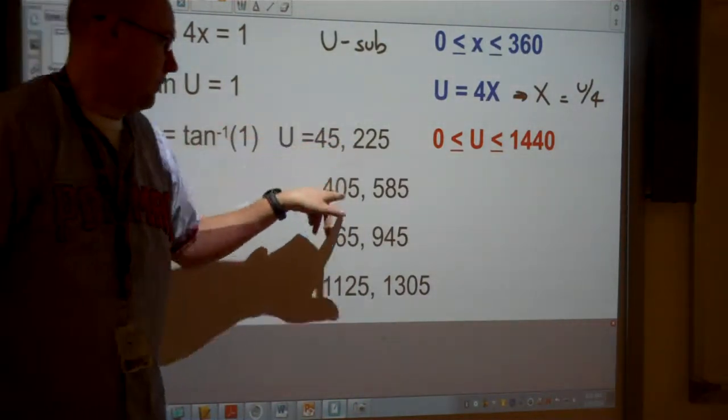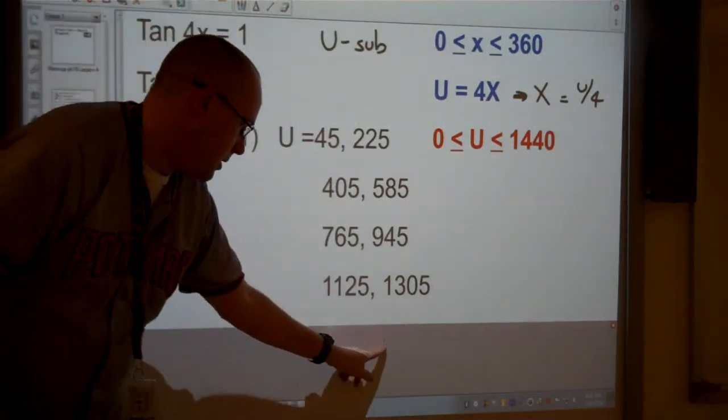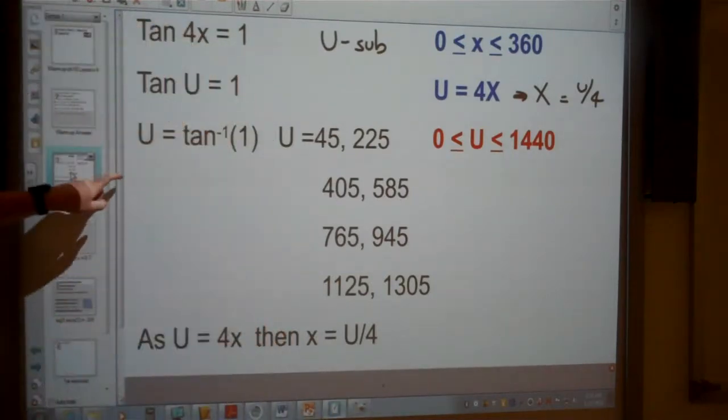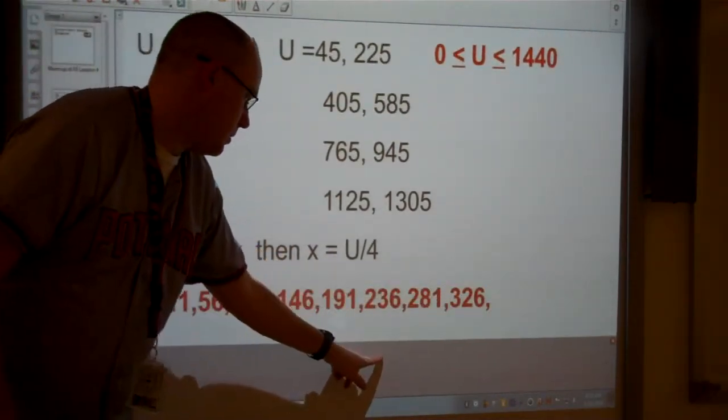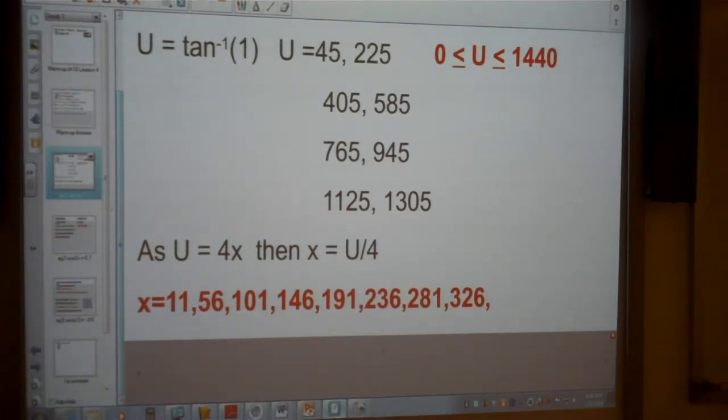So our last step is we actually need to divide all these answers by 4, and that's hopefully what I have on this very last step here. And we're going to end up with those answers, probably with quite a bit of rounding. So you might not want to round to the nearest degree immediately when you do these questions.